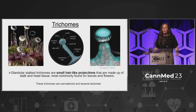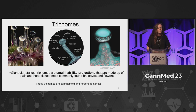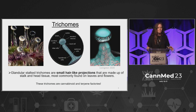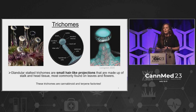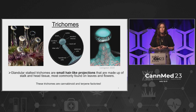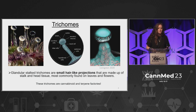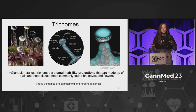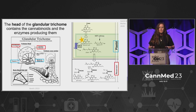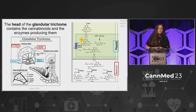Cannabinoids are produced in trichomes, and there are different types of trichomes on the cannabis plant, but we're specifically interested in the glandular stalk trichome. These are small, hair-like projections made up of stalk and head tissue, most commonly found on leaves and flowers and on unpollinated female flowers. These trichomes are the cannabinoid and terpene factories that we're interested in. The center image shows a diagram of this trichome with the base stalk and at the top, the secretory vesicles and cells — this is what we're interested in.